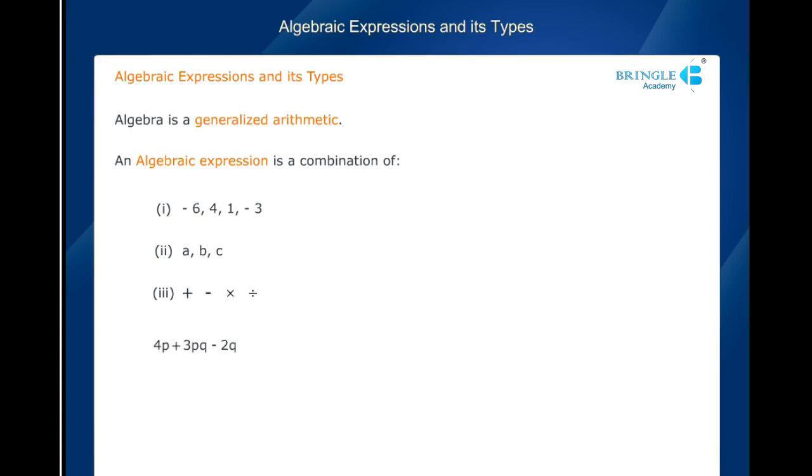In the given expression, 3pq is separated from 4p by a plus sign and from 2q with a minus sign. Each part is called a term of the expression. Thus we have three terms in the given expression, namely 4p, 3pq and 2q.